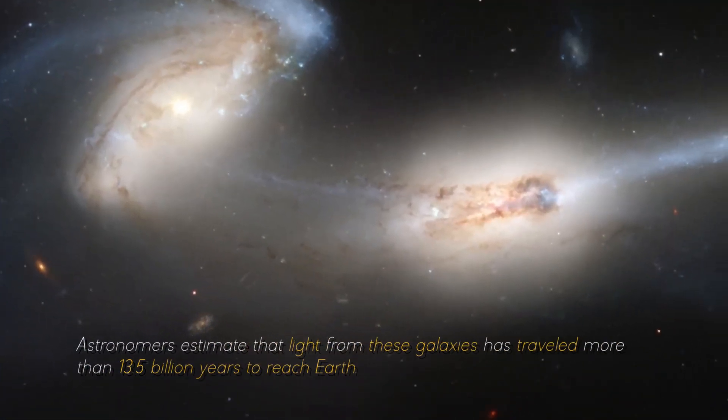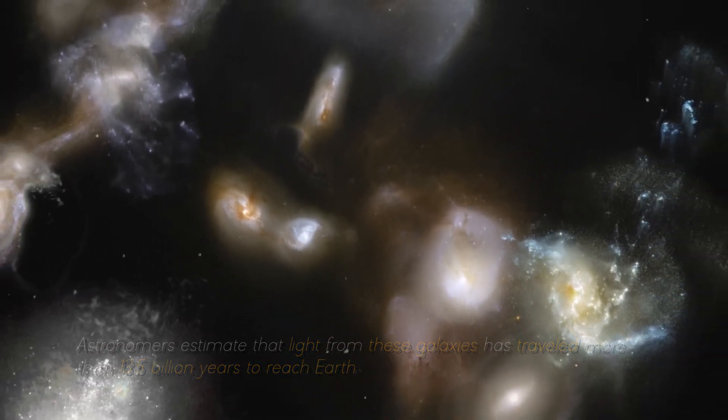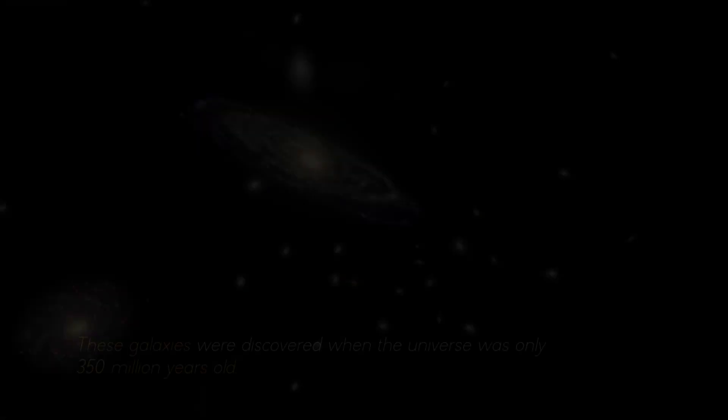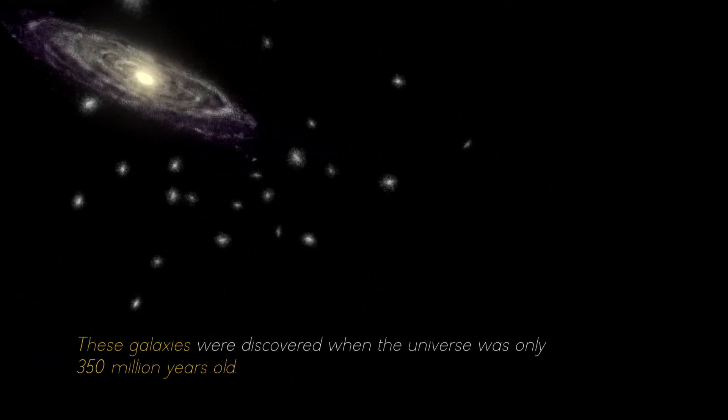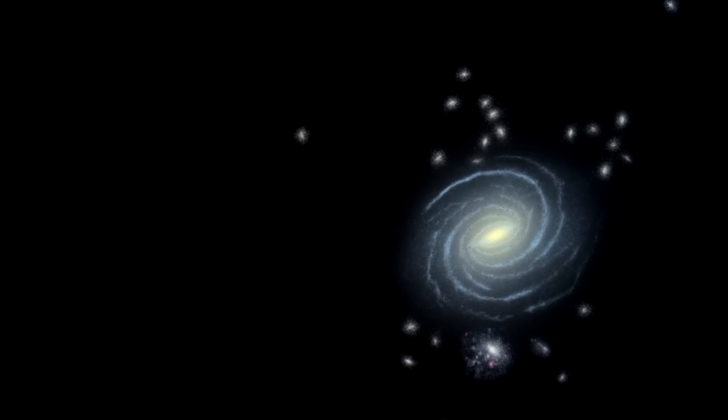Astronomers estimate that light from these galaxies has traveled more than 13.5 billion years to reach Earth, giving us a glimpse into the distant past of the universe. These galaxies were discovered when the universe was only 350 million years old, shedding light on how quickly the first generations of galaxies emerged.